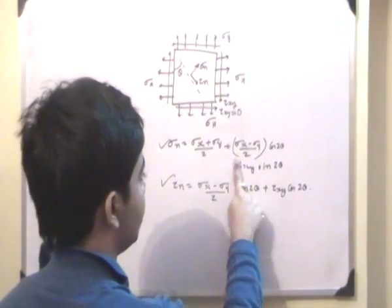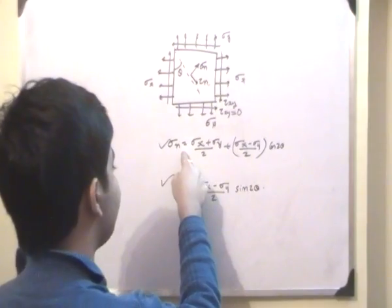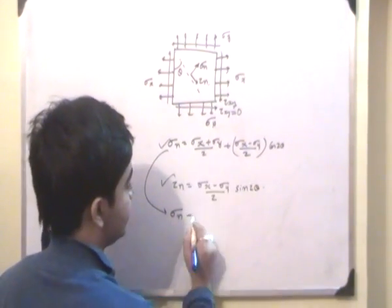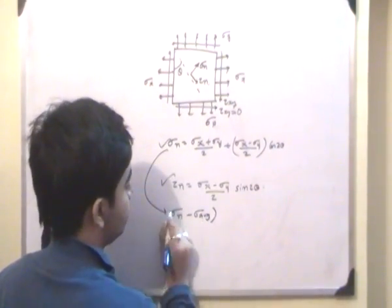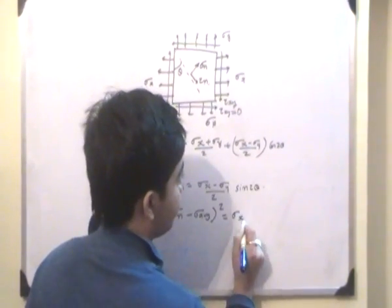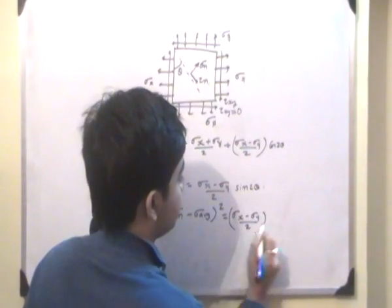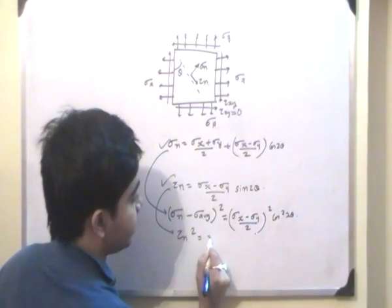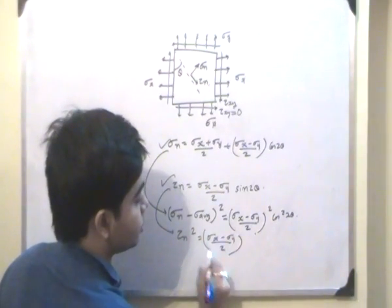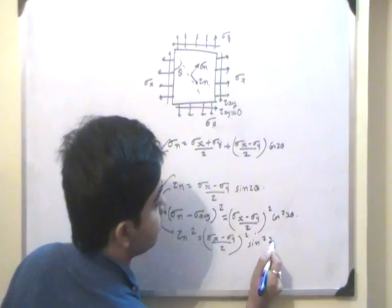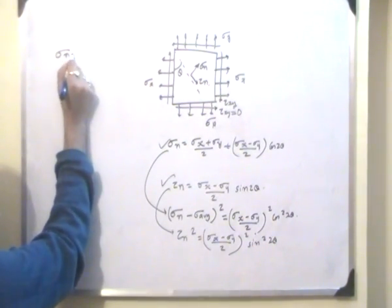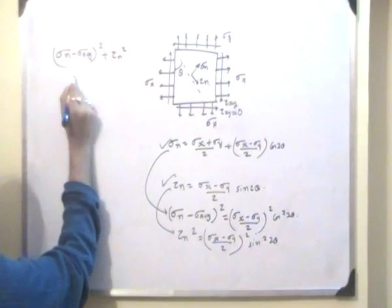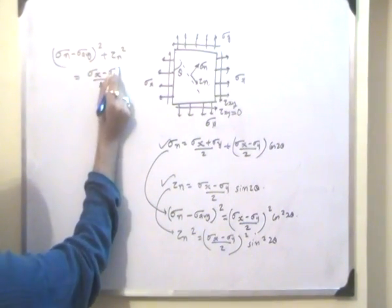If we put tau_xy equal to 0, then those terms vanish. So I am left with sigma_n and tau_n. Now, sigma_n minus sigma_average, if we square it up, will be equal to (sigma_x minus sigma_y by 2) squared times cos²(2θ). And tau_n squared will be equal to (sigma_x minus sigma_y by 2) squared times sin²(2θ). Adding these up, we have (sigma_n minus sigma_average)² plus tau_n² equals (sigma_x minus sigma_y by 2) squared.